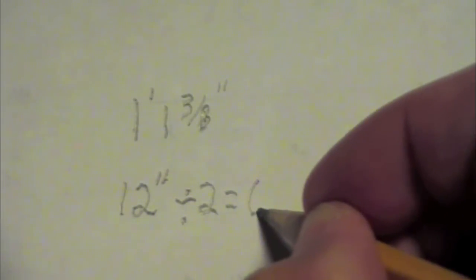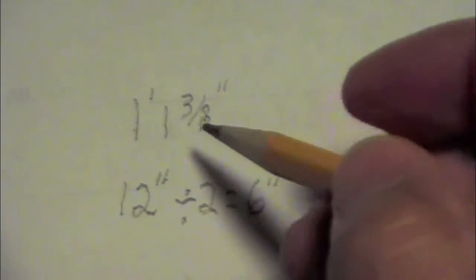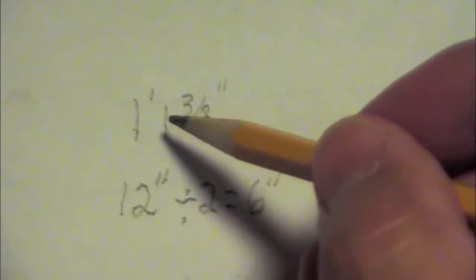Well, the one foot also equals twelve inches. Dividing that in half equals six inches. So we've taken care of the one foot part.